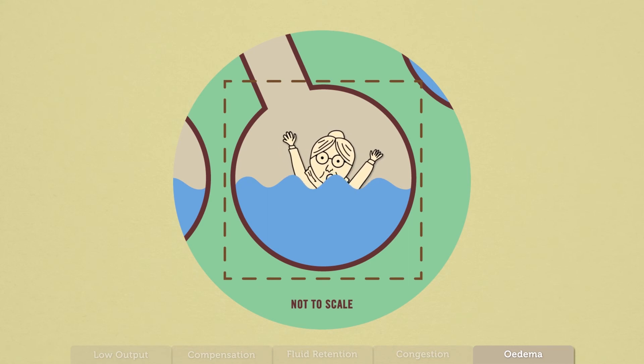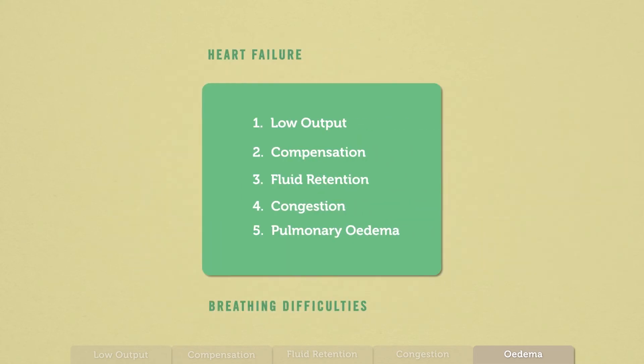It sounds like this compensation and the fluid accumulation isn't helping me. It's making my breathing worse. Exactly. That is the problem with chronic low-output heart failure. Over time, the compensation and fluid accumulation causes problems in the lungs, as well as further damaging the heart.